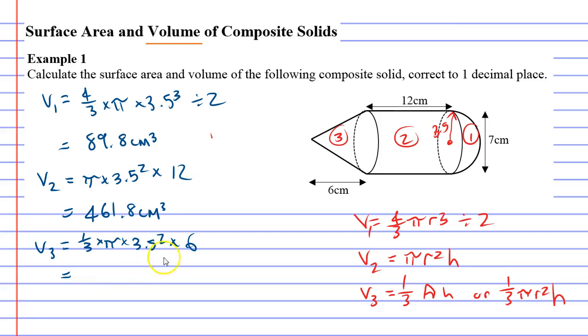Now to find the total volume, we just add all these up. So 89.8 plus 461.8 plus 77.0 equals 628.6 centimeters cubed.